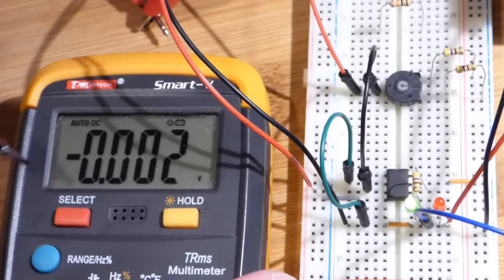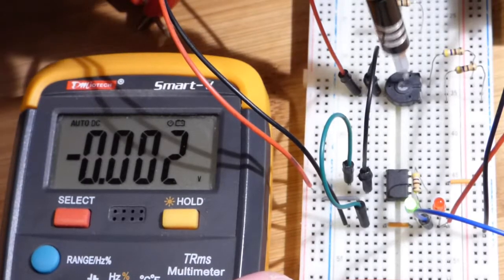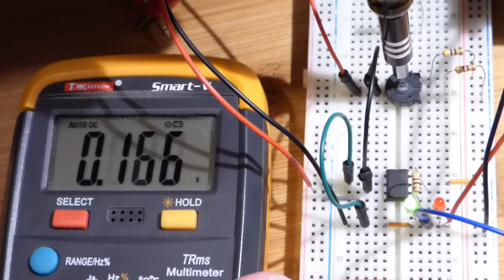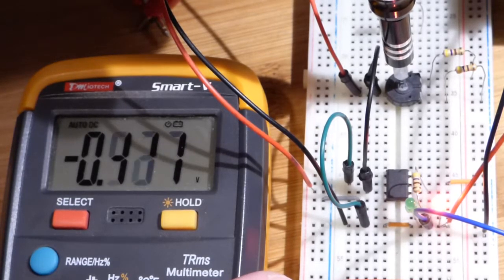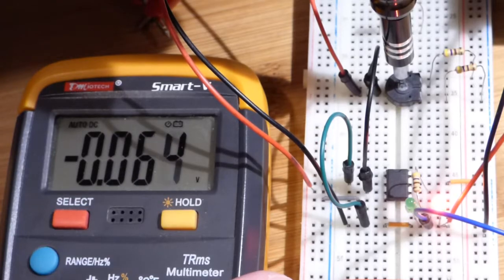We're going to move along to the next measurement we want to get. So this was pretty clear. Whenever it's even slightly positive, the green LED comes on. Whenever it's even slightly negative, the red LED comes on.